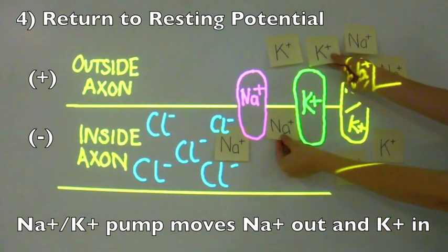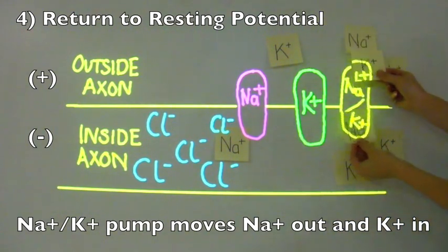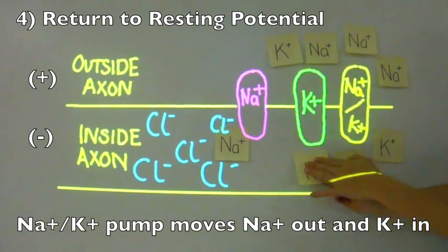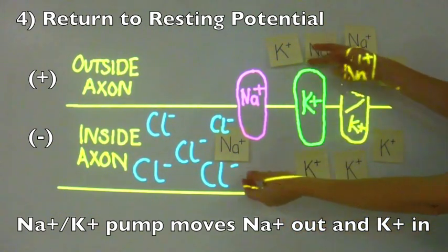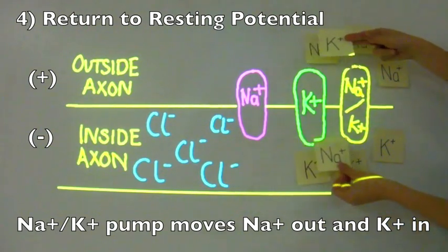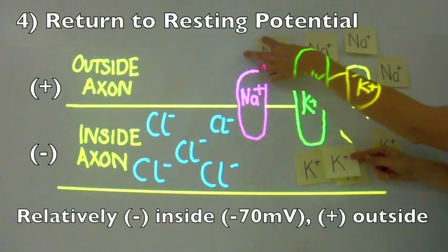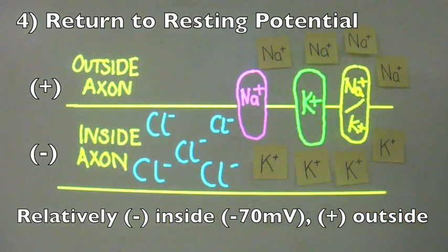This means you can't send an action potential, and the sodium channels are also closed. The sodium ions are moved back outside and the potassium ions moved back inside via the sodium potassium pump, returning us to the resting potential from stage 1.